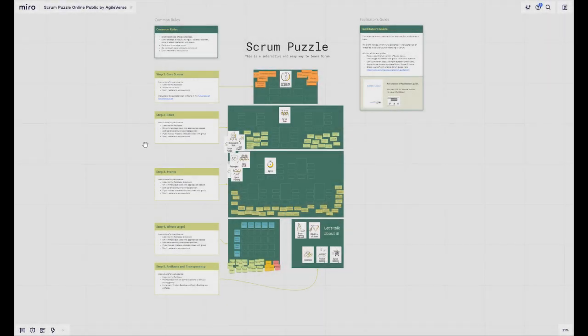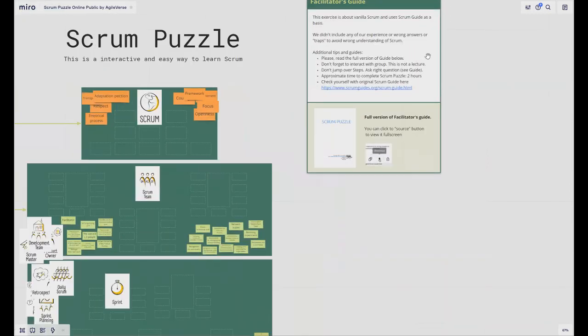Now you can see the board which has all elements of Scrum Puzzle. In the middle there are several green sections which should be completed by your student or group. On the left side there are boxes with short instructions for each step. On the right side there is a facilitator's guide that consists of detailed guide through all elements of the exercise.